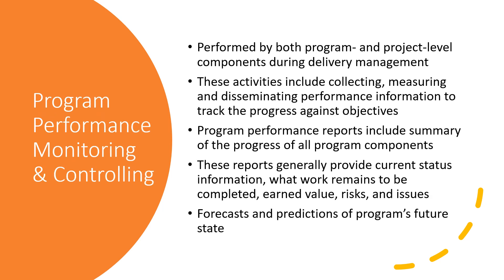Now let us understand program performance monitoring and controlling. It is performed at both program and component level during delivery management. These activities include collecting, measuring, and disseminating performance information to track progress against objectives. The program performance reports include a summary of the progress of all program components, and generally provide current status information, what work remains to be completed, and information on value, risks, issues, and benefits. Forecasts of the program's future state can also be included.